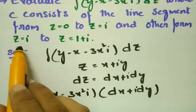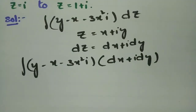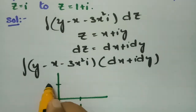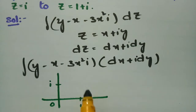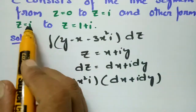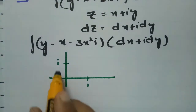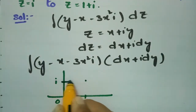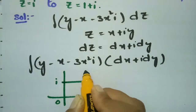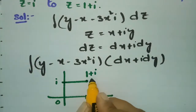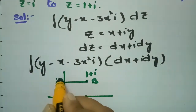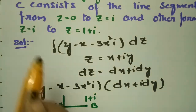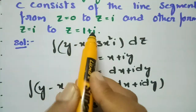In the complex plane, we have the path from z=0 to z=i, and then from z=i to z=1+i. The diagram shows: the origin at 0, the point i on the imaginary axis, and the point 1+i. So point A is at i and point B is at 1+i.